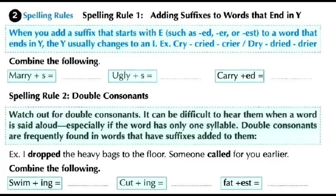Similarly: 'cut' becomes 'cutting' — we double the T. 'Fat' becomes 'fattest' — we double the last letter because it is preceded by a vowel.